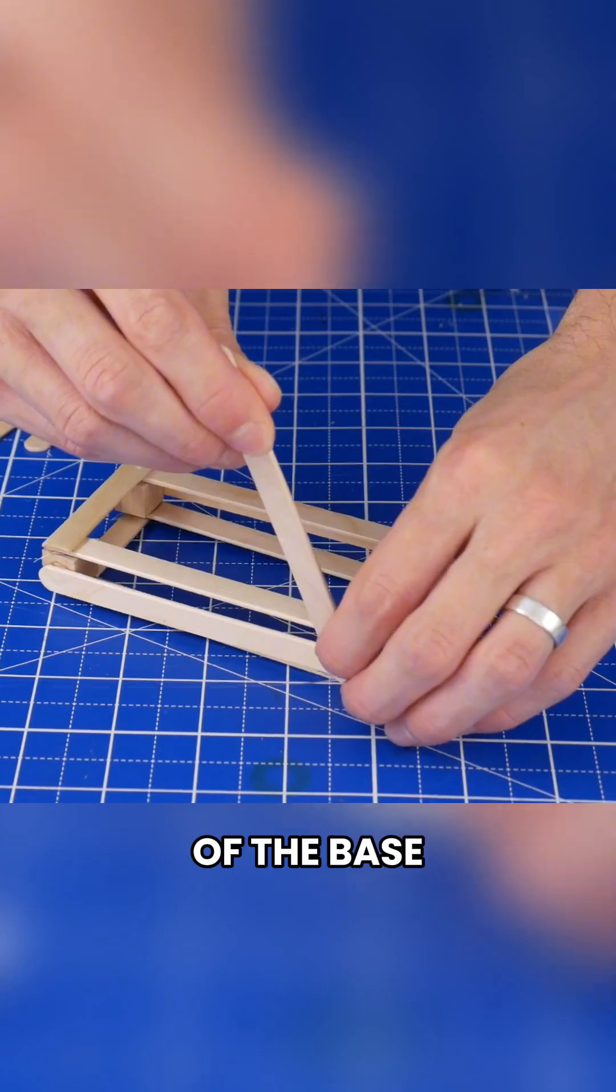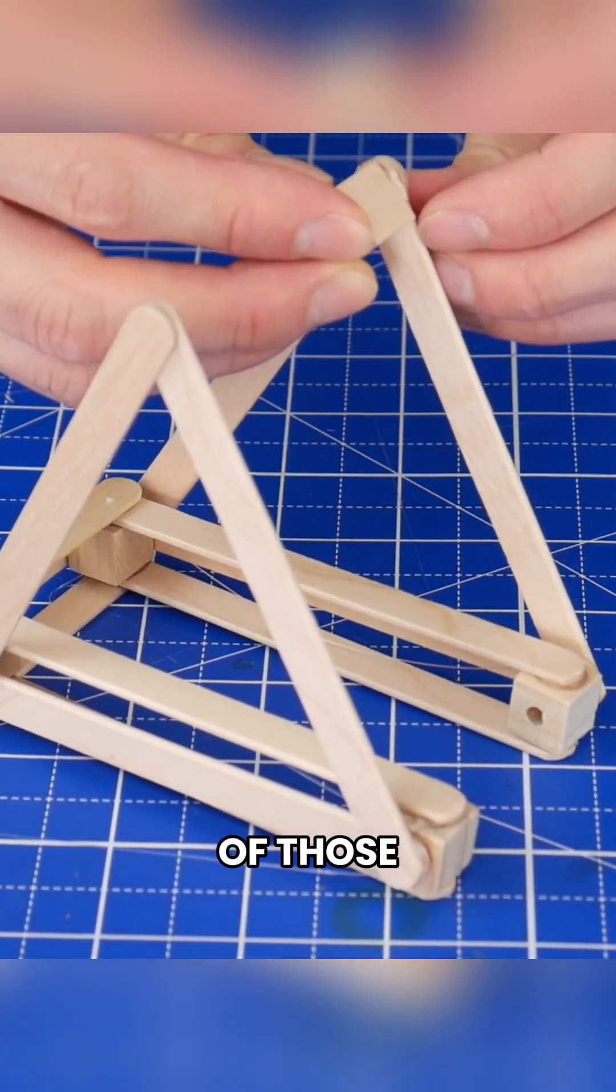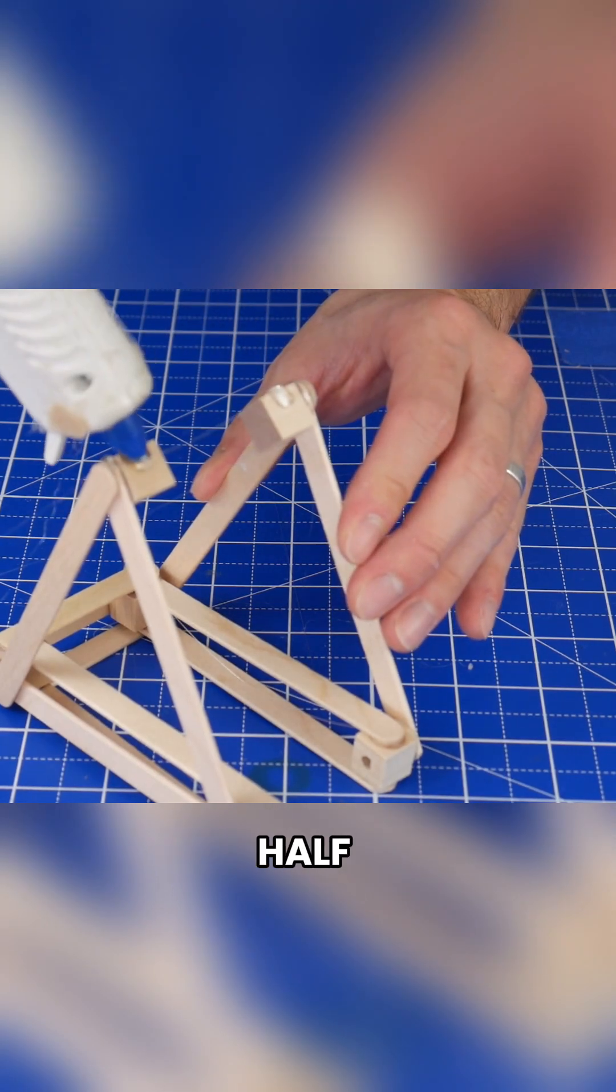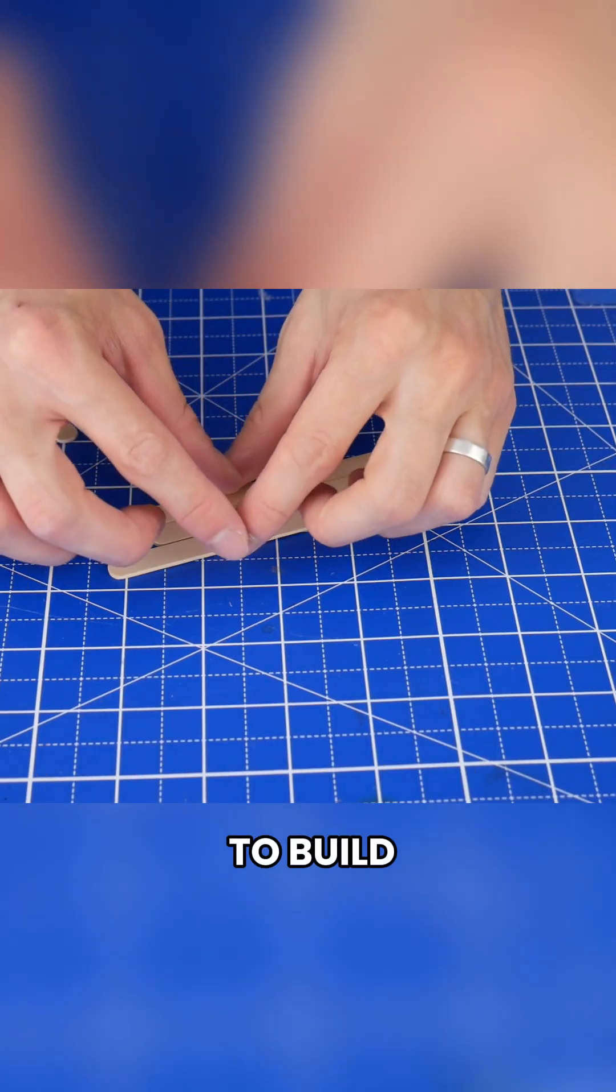Glue two regular cubes to the top of each triangle, then glue the remaining half stick pieces onto all four sides of these cubes. Okay, now we need to build the catapult arm.